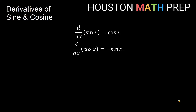So you can see if I start with a function of sine x and take the derivative, and then take the derivative of that again, I get negative sine x. Think about what would happen if we took the derivative again — the derivative of negative sine x. Think of this as negative 1 out front times sine x. The derivative of the sine x part would be cosine x, so we would get negative 1 times cosine x.